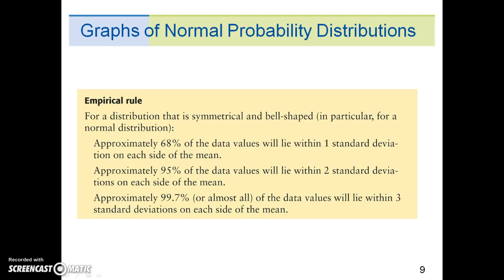For the empirical rule, a distribution that is symmetrical and bell-shaped, in particular for a normal distribution, approximately 95% of the data values will lie within two standard deviations on each side of the mean.